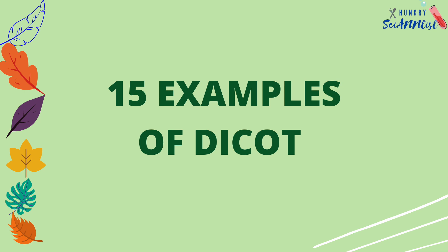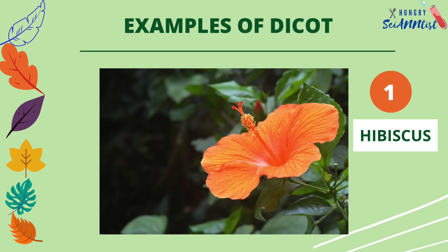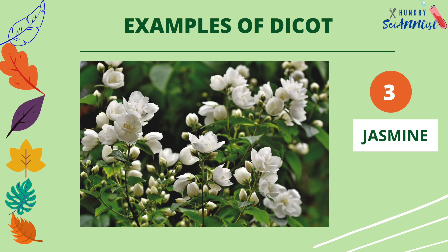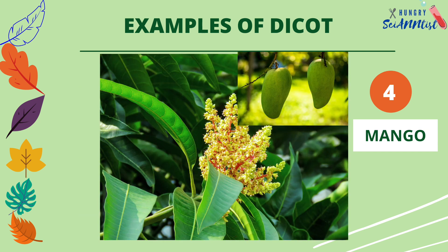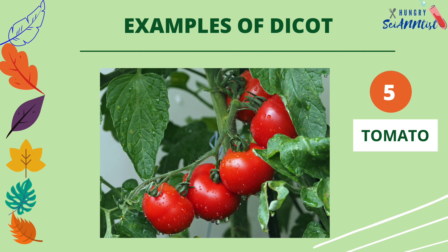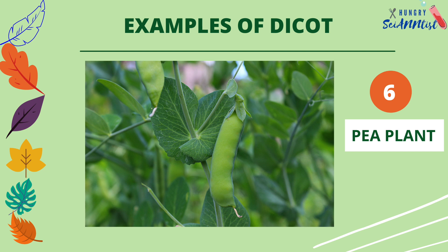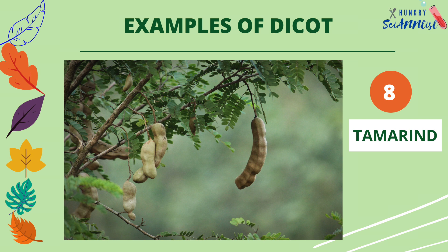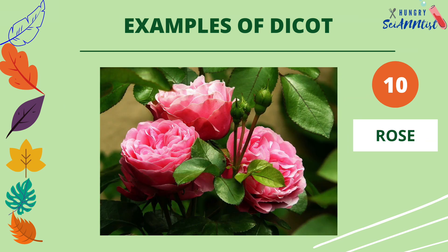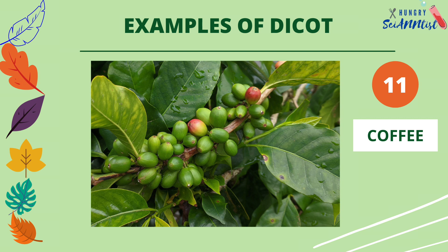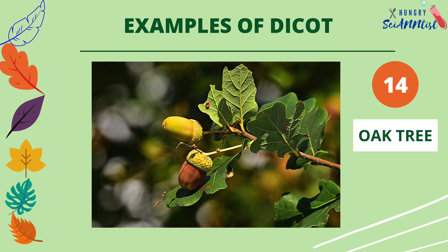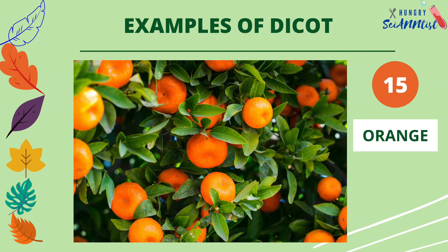Examples of dicot plants: hibiscus, sunflower, jasmine, mango, tomato, pea plant, lemon, tamarind, guava, rose, coffee, avocado, apple, oak tree, and orange.